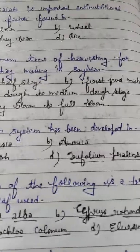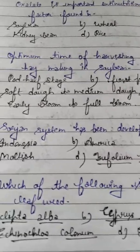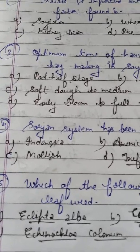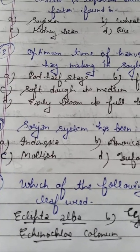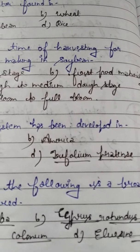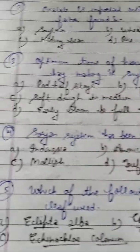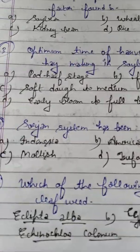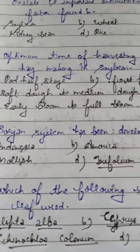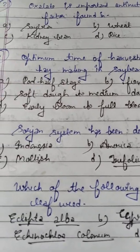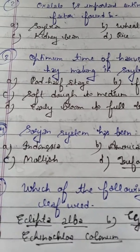Options C and D are nonsense options. Molish coined the term allelopathy, and Trifolium pretense is red clover. So you eliminate options C and D. The Srojan system has been developed in Indonesia.